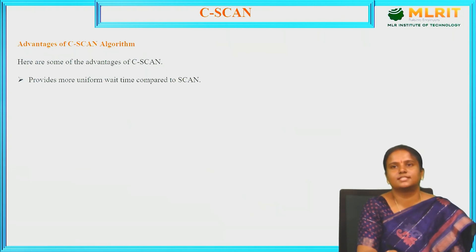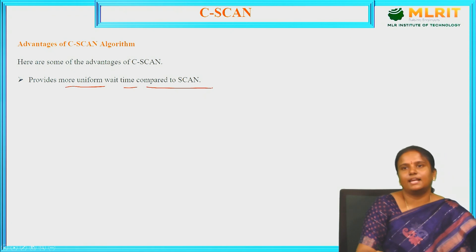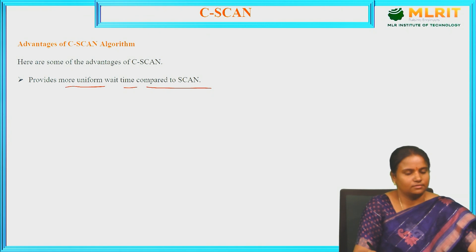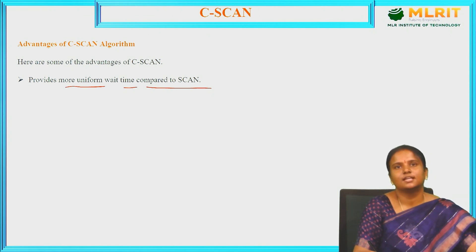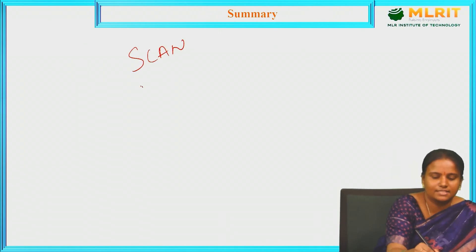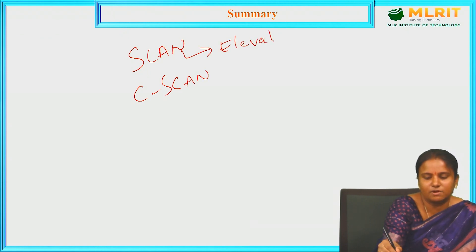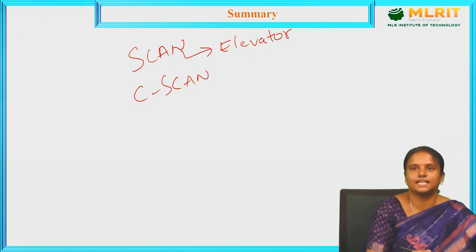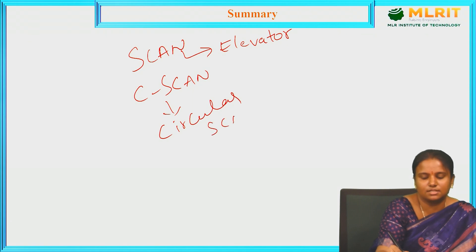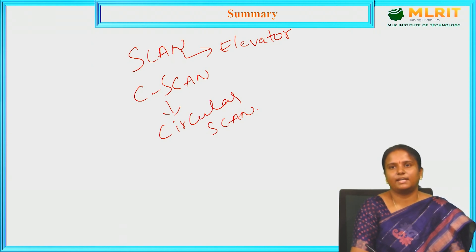One advantage of the C-SCAN algorithm is that it provides more uniform wait time compared to the SCAN algorithm. In this session we have seen the SCAN algorithm, which is also known as the elevator algorithm, and the C-SCAN algorithm, which is known as circular SCAN. These are the two algorithms discussed in this session. If you have any doubts, you can comment in the comment box. Thank you.